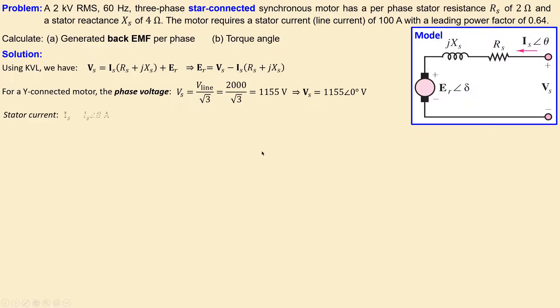The stator current is given by this expression: the magnitude and the associated phase angle theta. We know the magnitude is 100 amps. To calculate theta, we need the power factor.